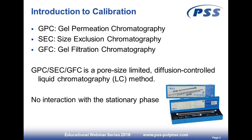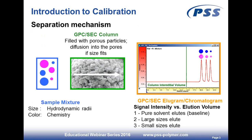GPC-SEC/GFC is a pore-size-limited, diffusion-controlled liquid chromatography method. In contrast to HPLC, we don't want any interaction with the stationary phase — we want to separate polymers according to the accessible pore volume in the column. The column is filled with porous particles, and inside the particles there are pores of different sizes; polymers can only enter pores if their size fits.